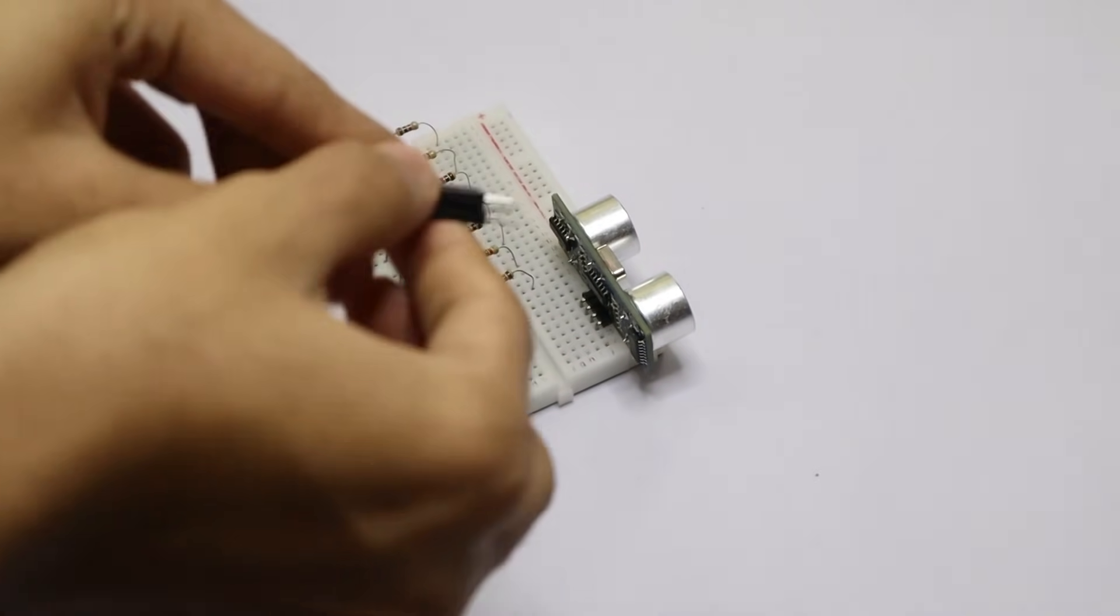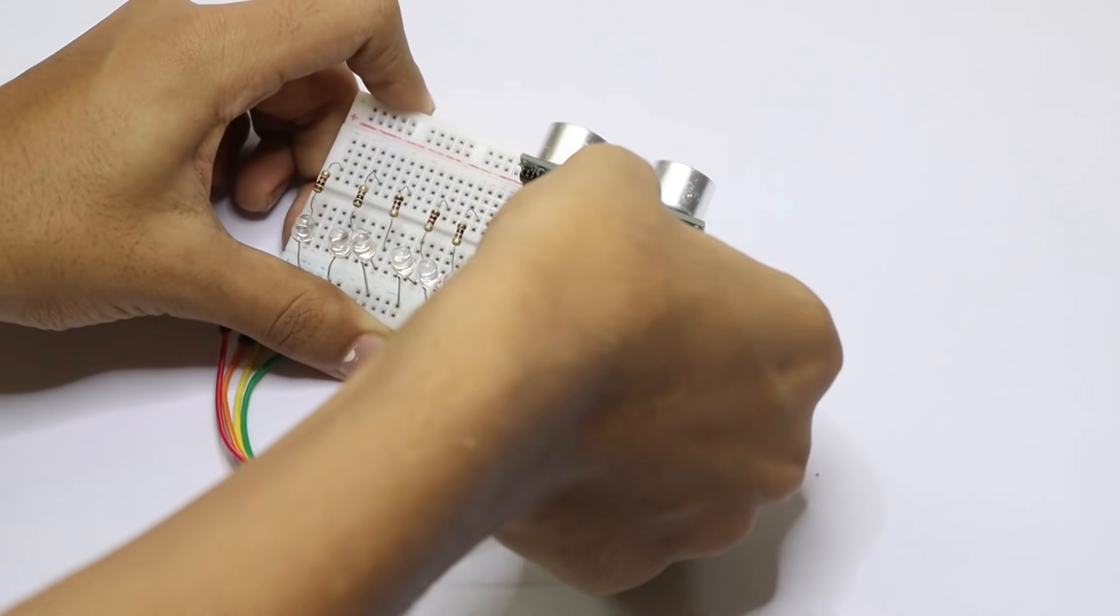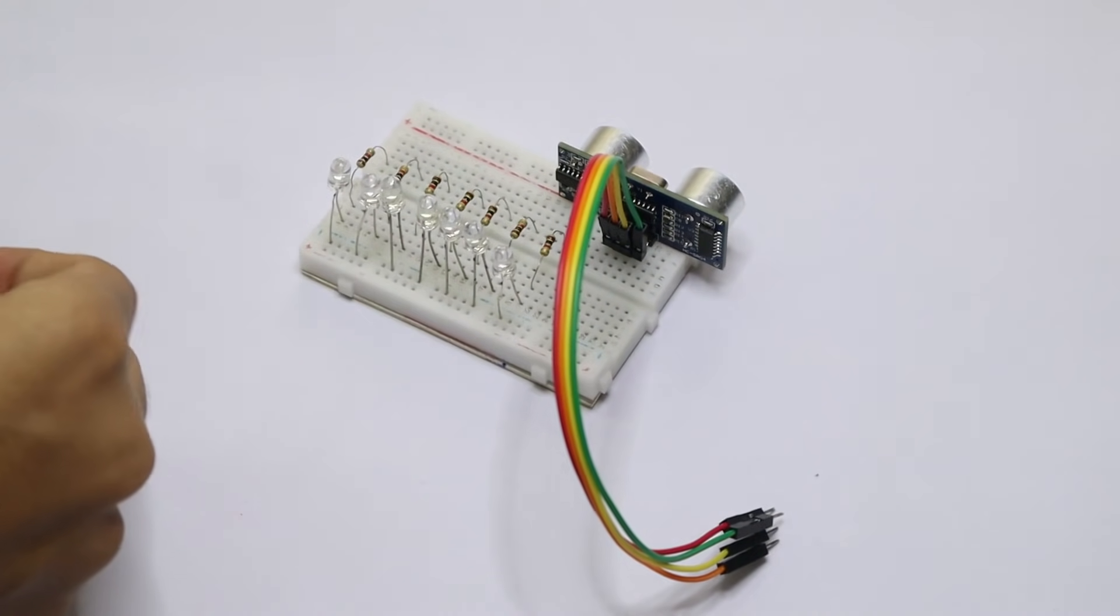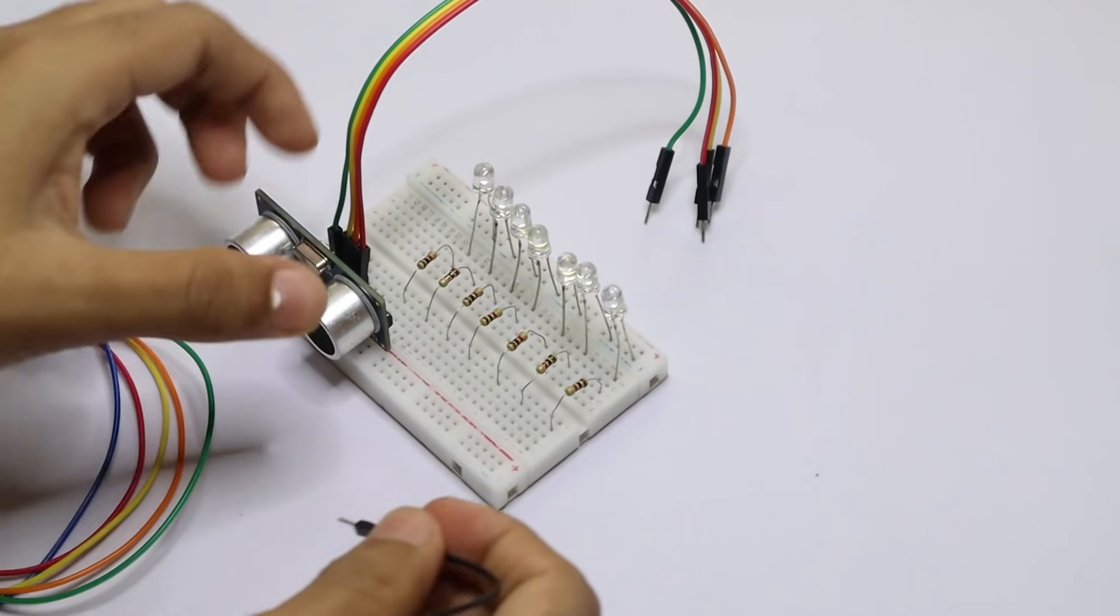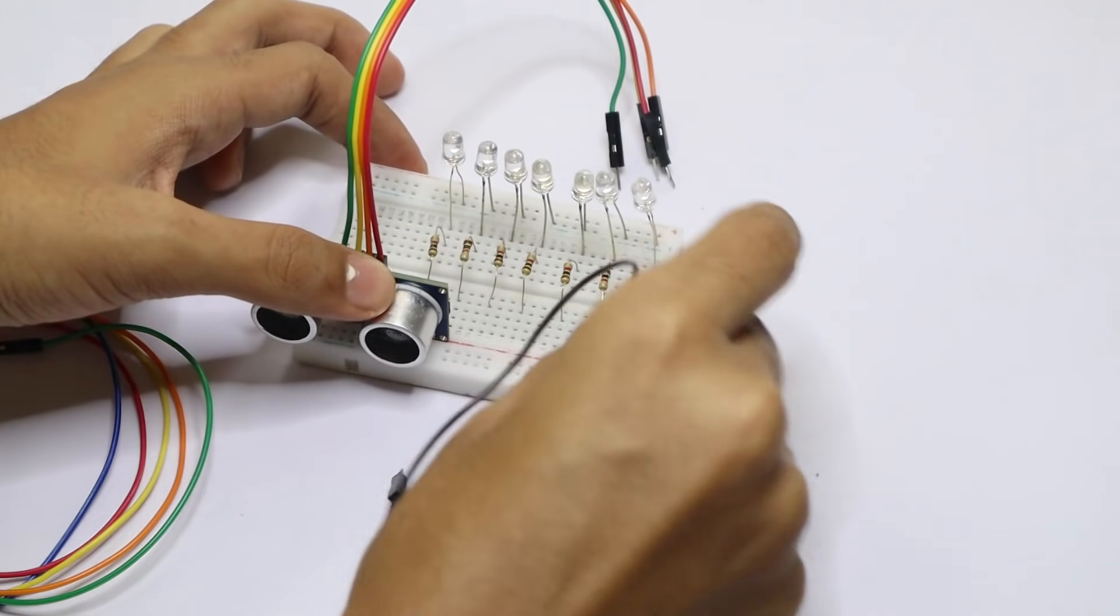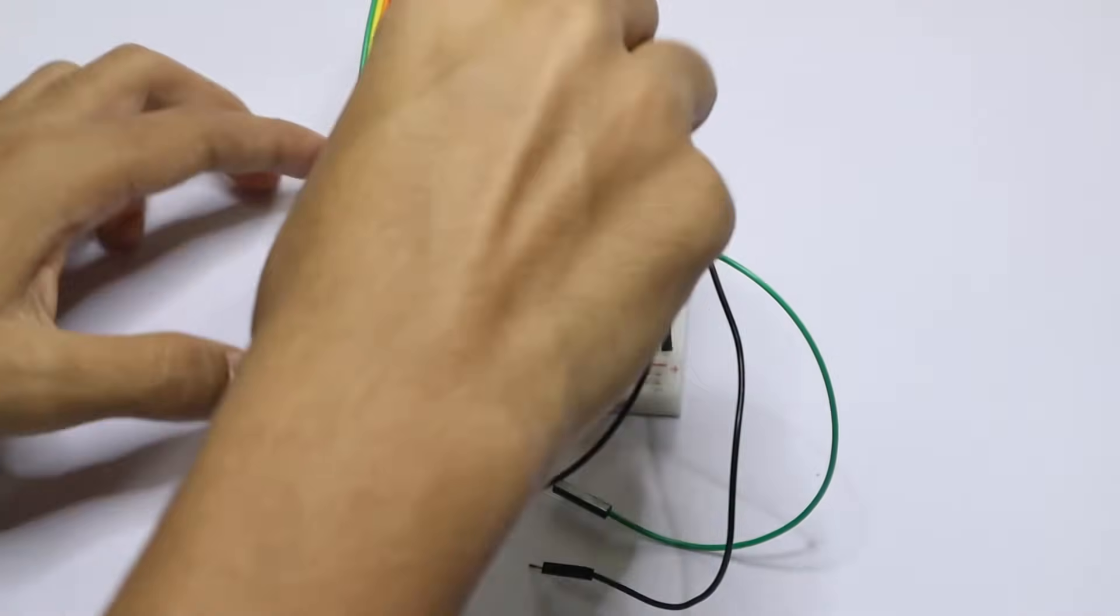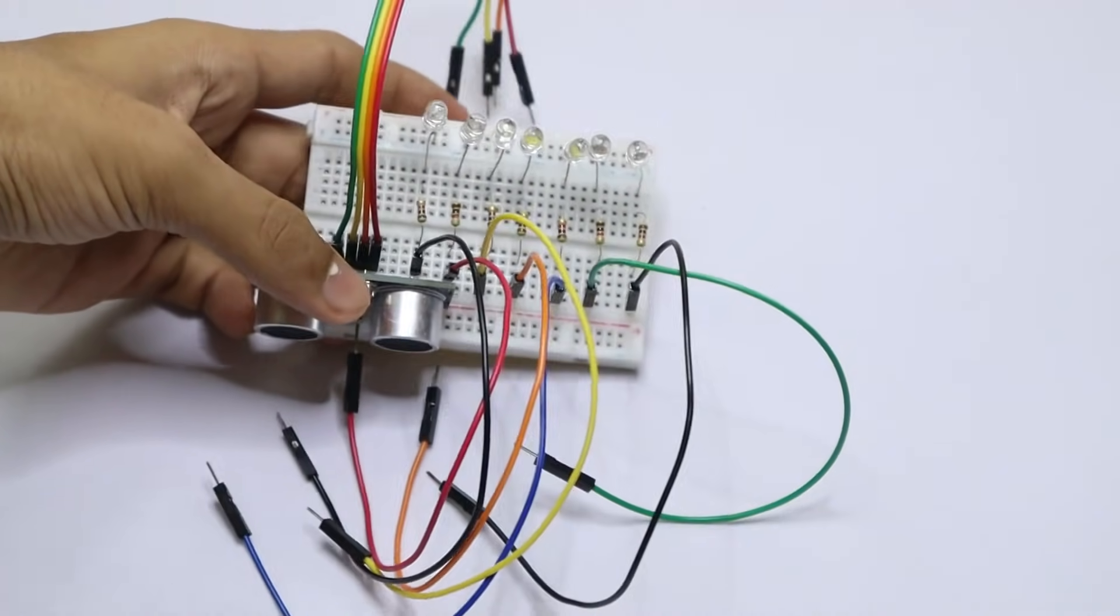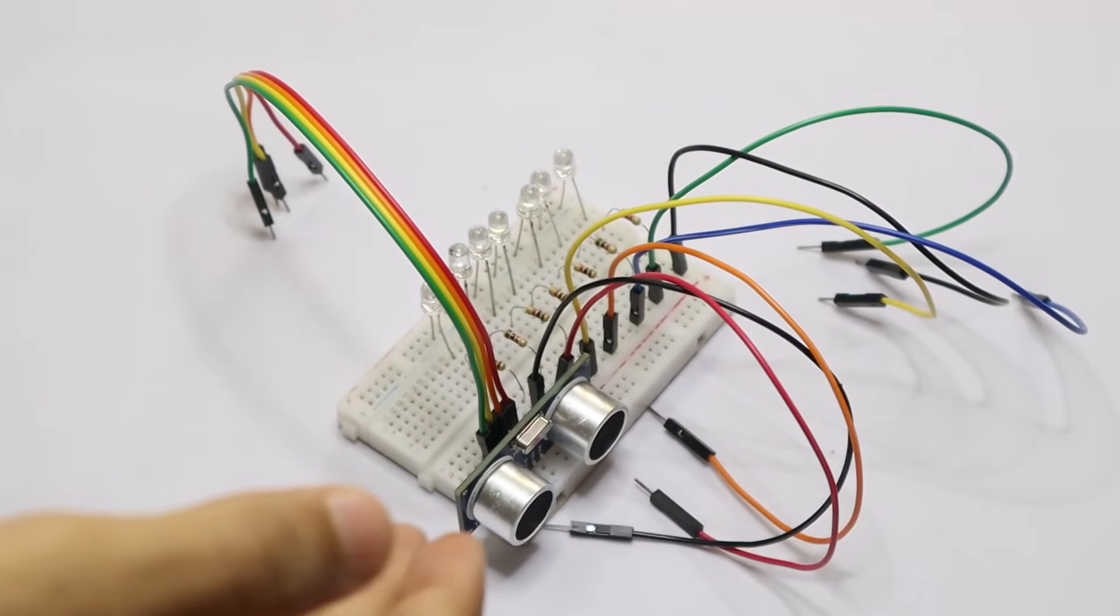Now take your jumper cables and start connecting. This is for the ultrasonic sensor. Now take each jumper cable and put it in front of the resistors like that. Now I have put all the jumper cables in front of the resistors.